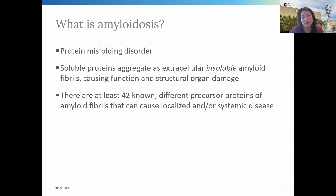So what is amyloidosis? Simply put, it's a protein misfolding disorder. Normal soluble proteins aggregate as extracellular insoluble amyloid fibrils, which then can deposit into any organ system causing functional and structural organ damage. It's a generic term for this amyloid protein deposition, so it's important to recognize that there's over 20 specific types of amyloid and at least 42 different known precursor proteins that can cause these amyloid fibrils to have downstream effects causing localized and/or systemic disease.